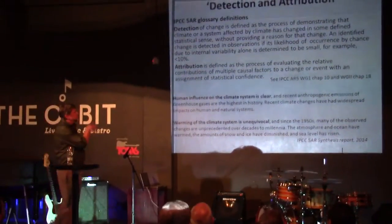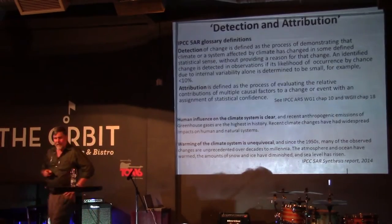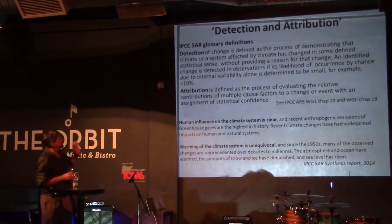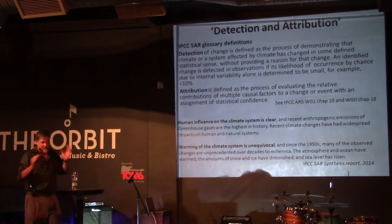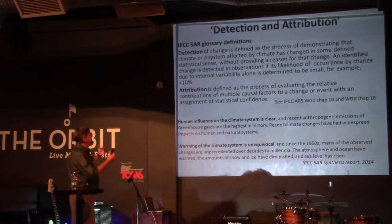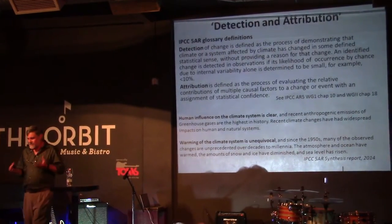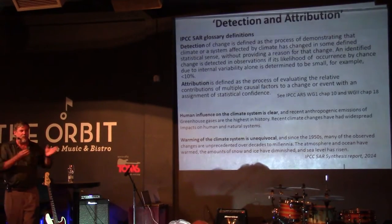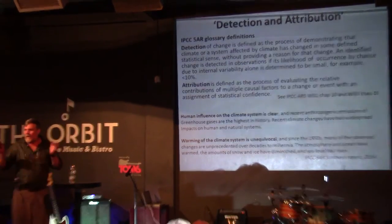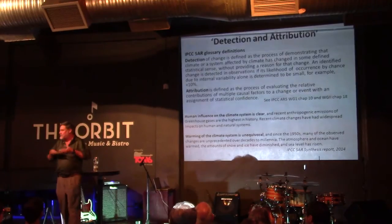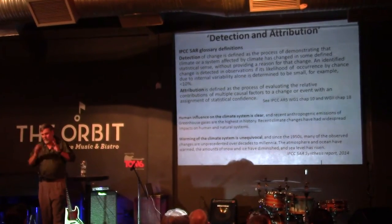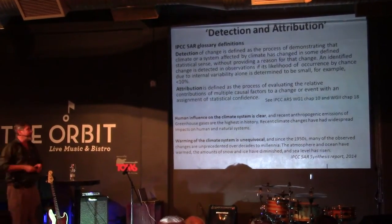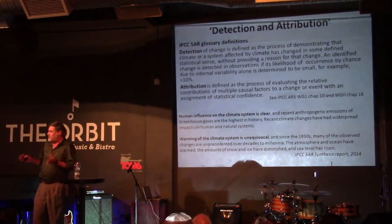This is the formal set of definitions — there'll be a test afterwards. Within the Intergovernmental Panel on Climate Change Fifth Assessment Report glossary, detection is simply a statistical process to say something is not what it was at some predefined previous time. You use a statistical approach to look for trend detection, or in a non-continuous variable, you're looking for a change between one time and another time. Relatively straightforward.